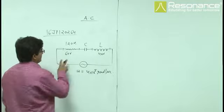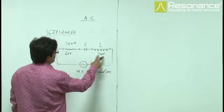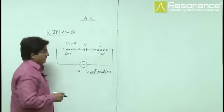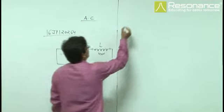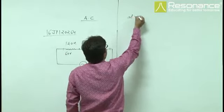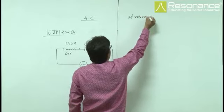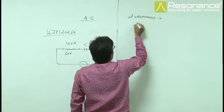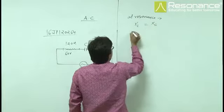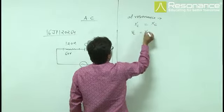Potential drop across resistor is 60 volt and across inductor is 40 volt. This is at resonance, so we know that at resonance, XL equals XC and VL equals VC.